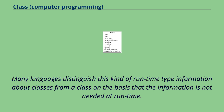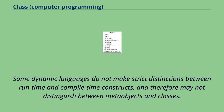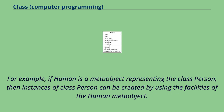Many languages distinguish runtime type information about classes from a class on the basis that the information is not needed at runtime. Some dynamic languages do not make strict distinctions between runtime and compile-time constructs and therefore may not distinguish between meta-objects and classes. For example, if 'Human' is a meta-object representing the class Person, then instances of class Person can be created by using the facilities of the Human meta-object.